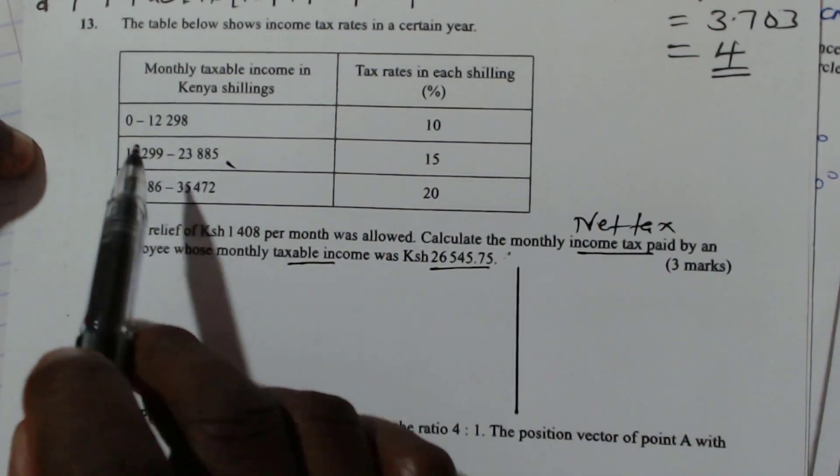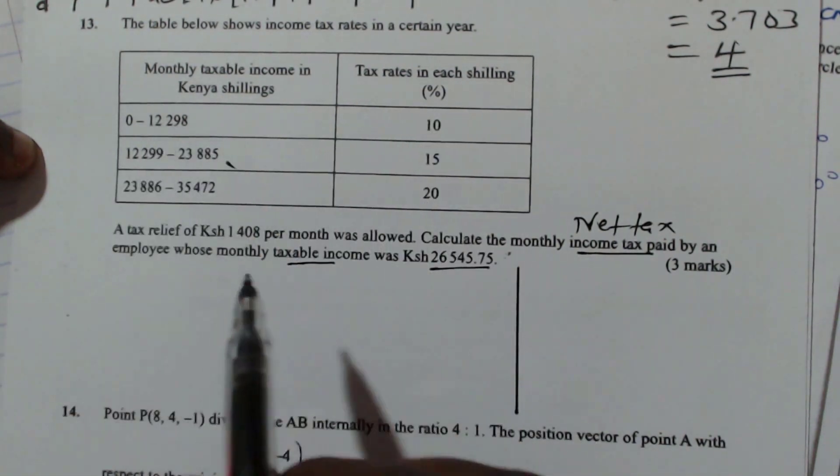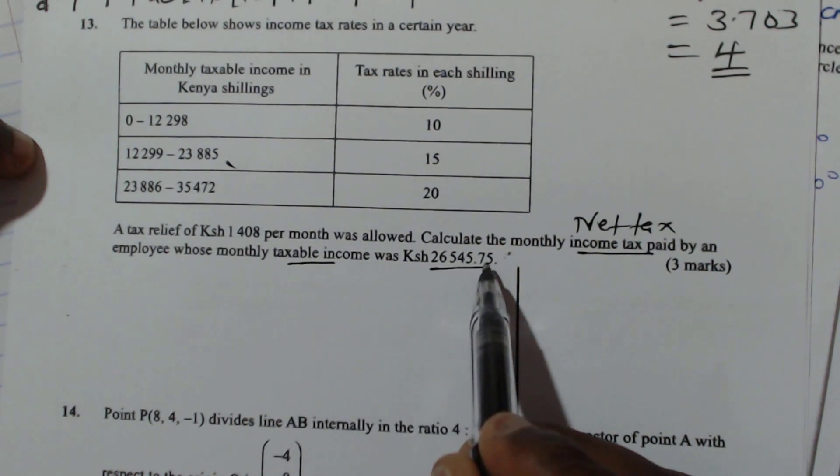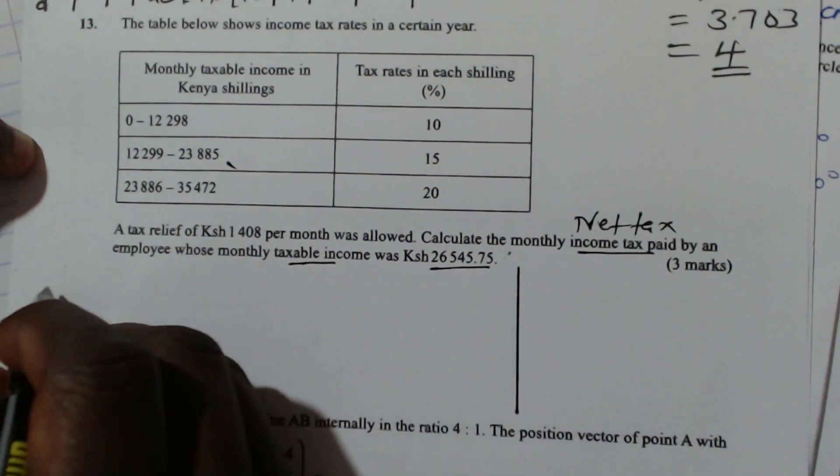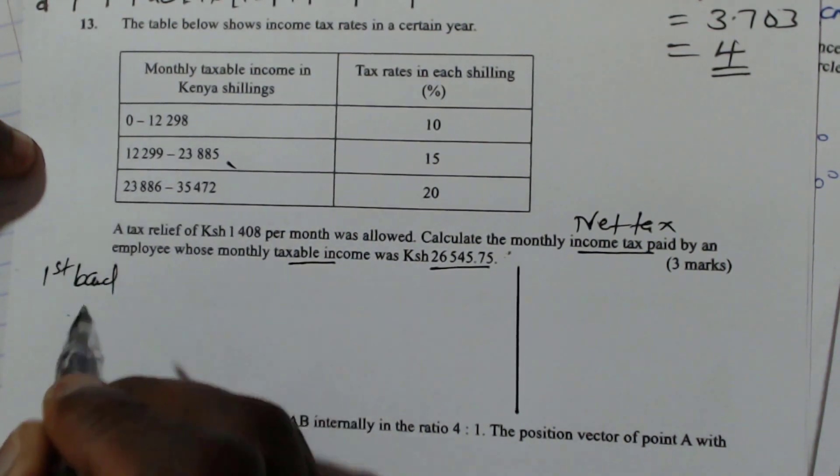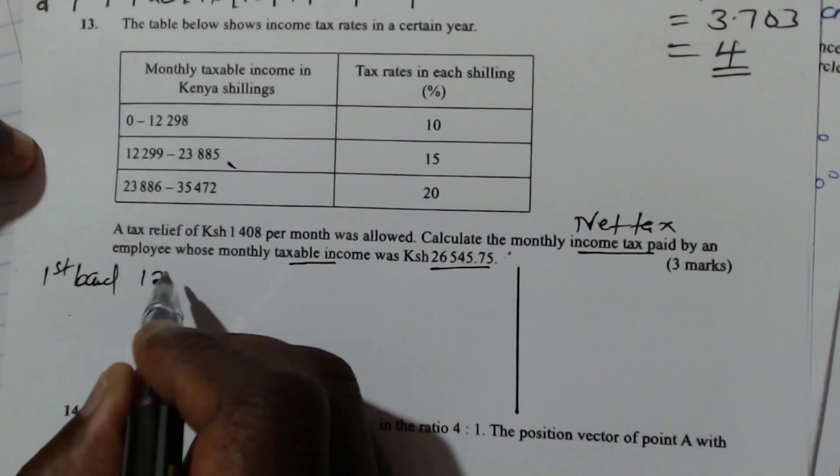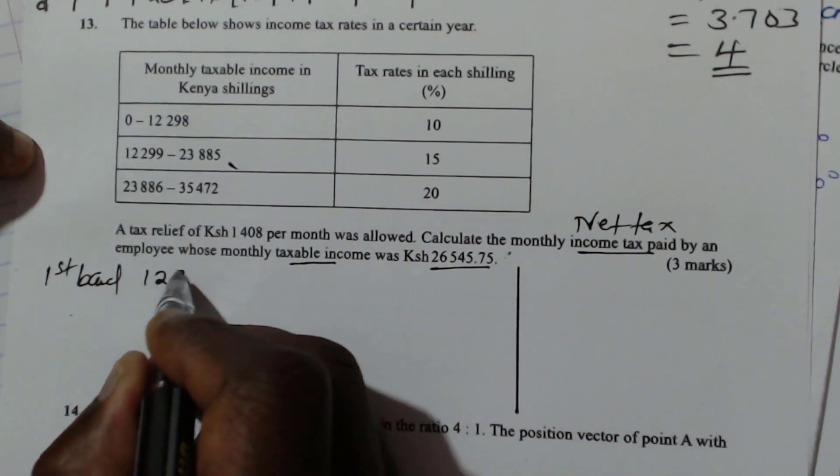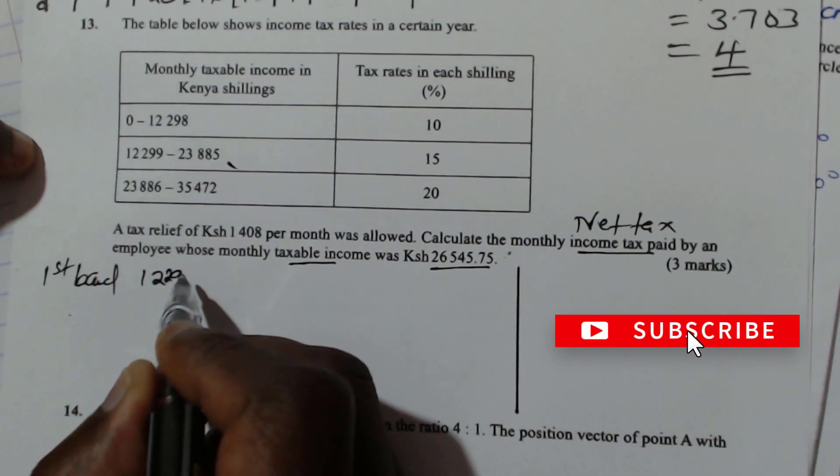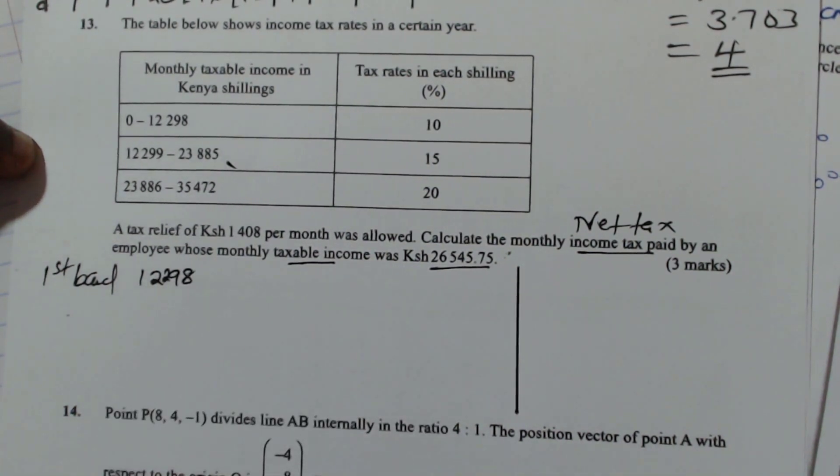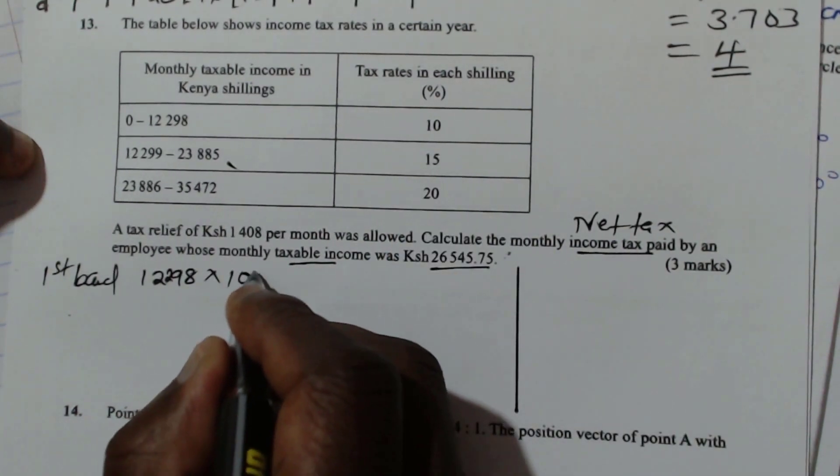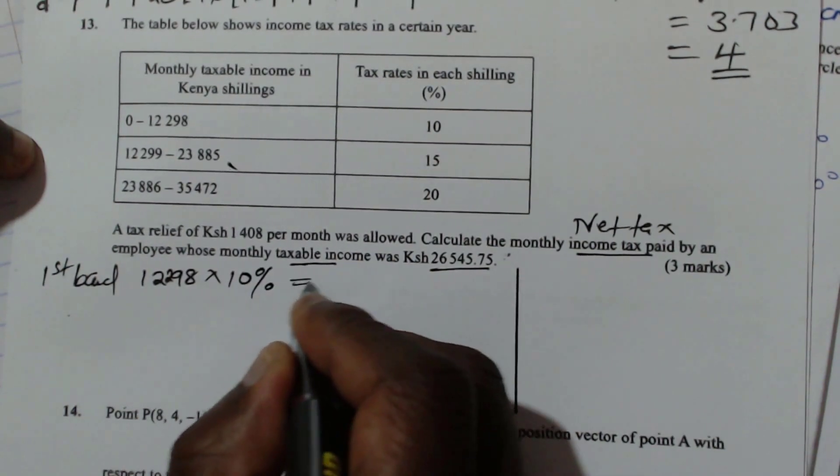So to do that, we're going to use these taxation bands that are given here. The amount that you are taxing, the tax of income is 26545.75 cents. So in the first band, we have 12,298, multiply by the taxation there is 10%. So we multiply by 10%, we get the tax.